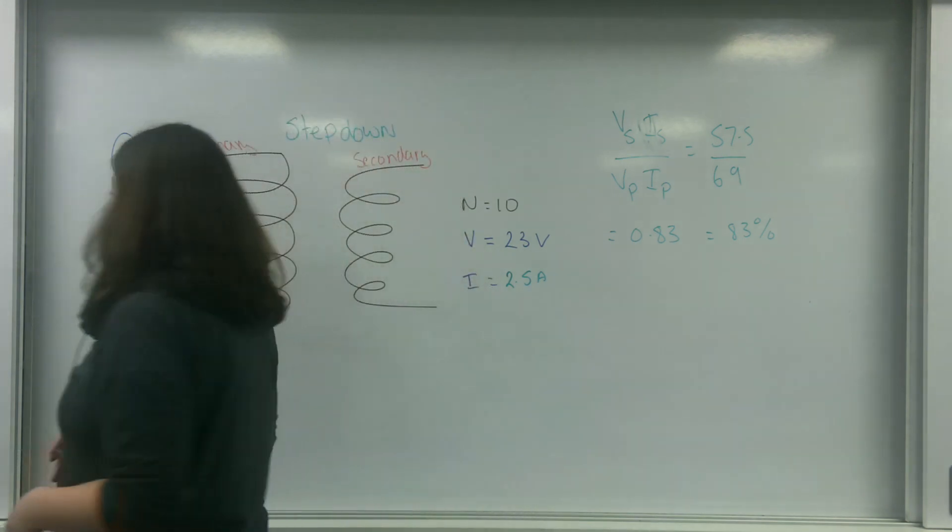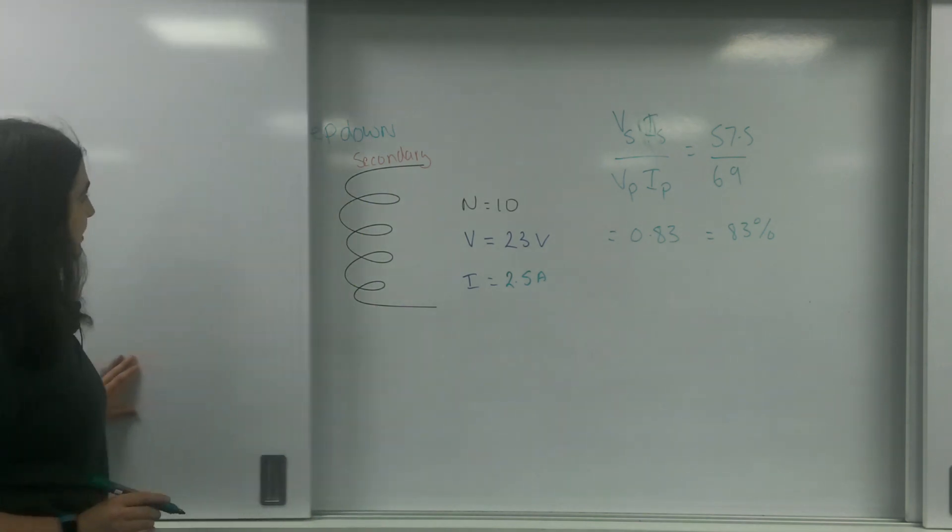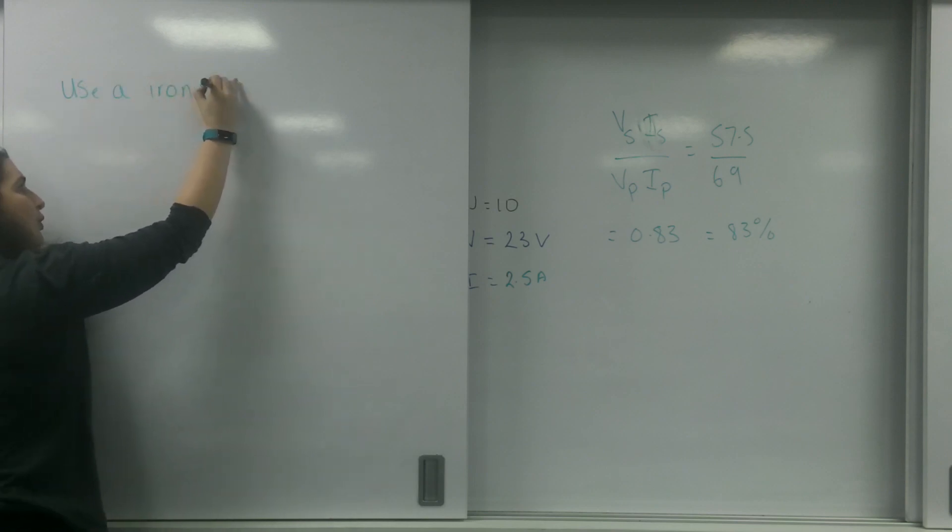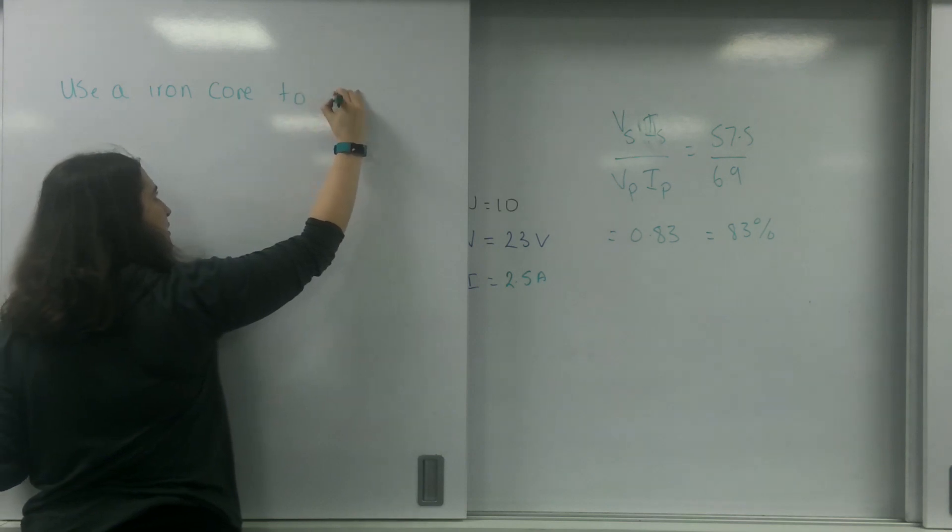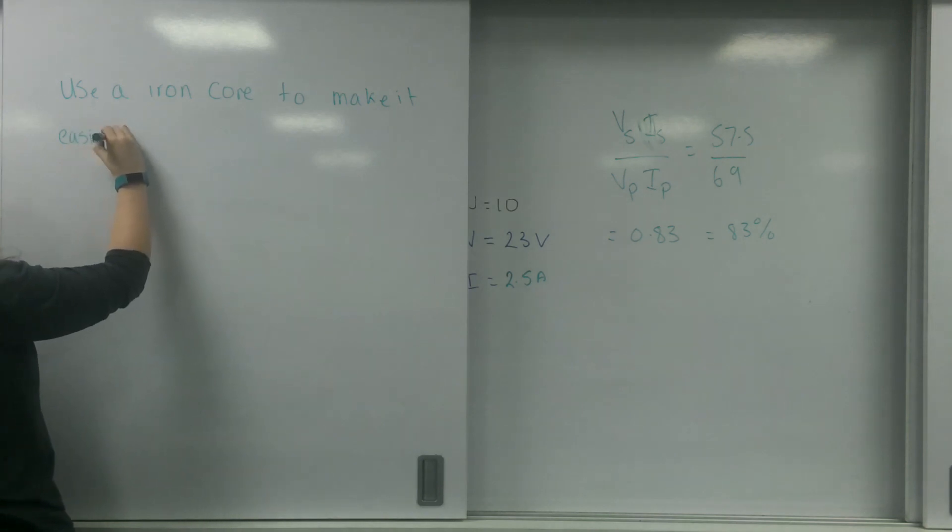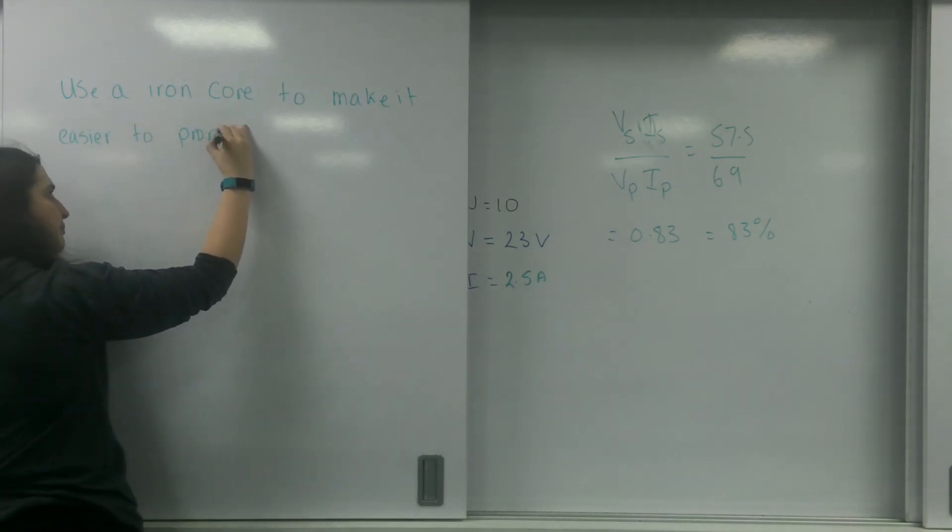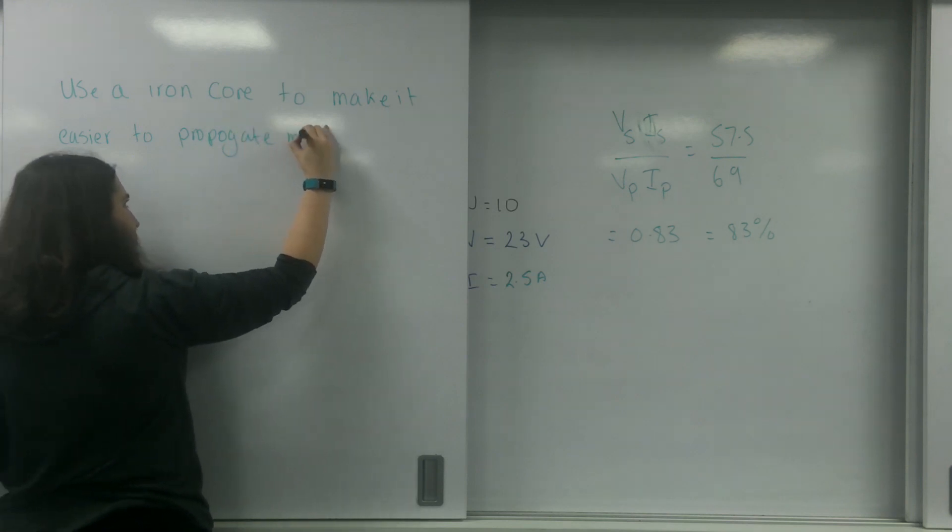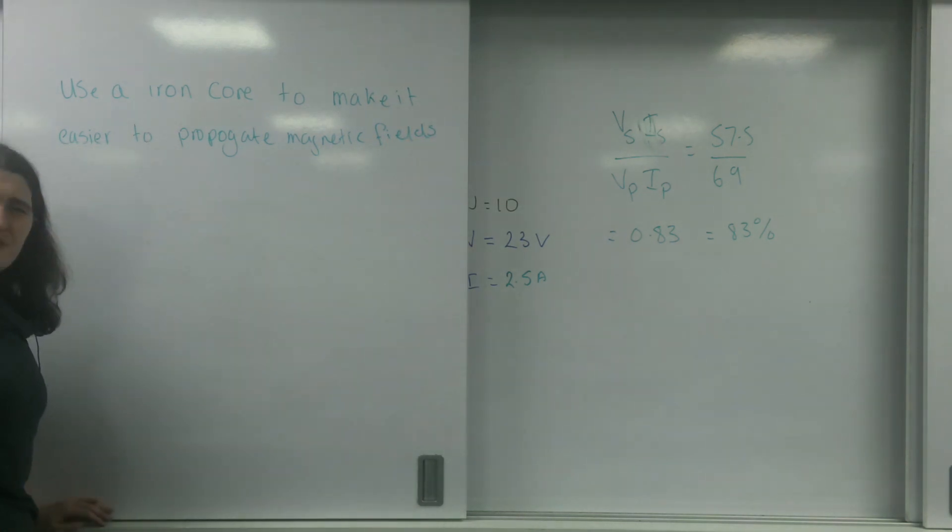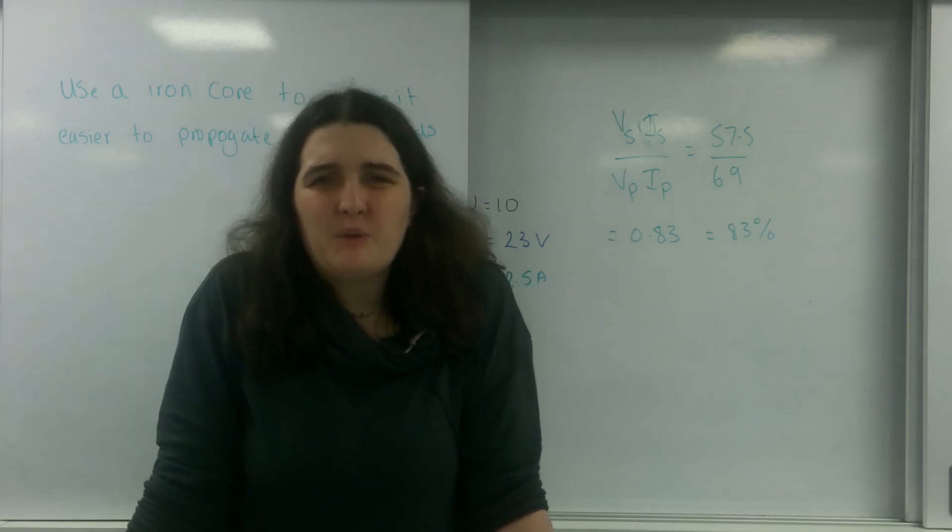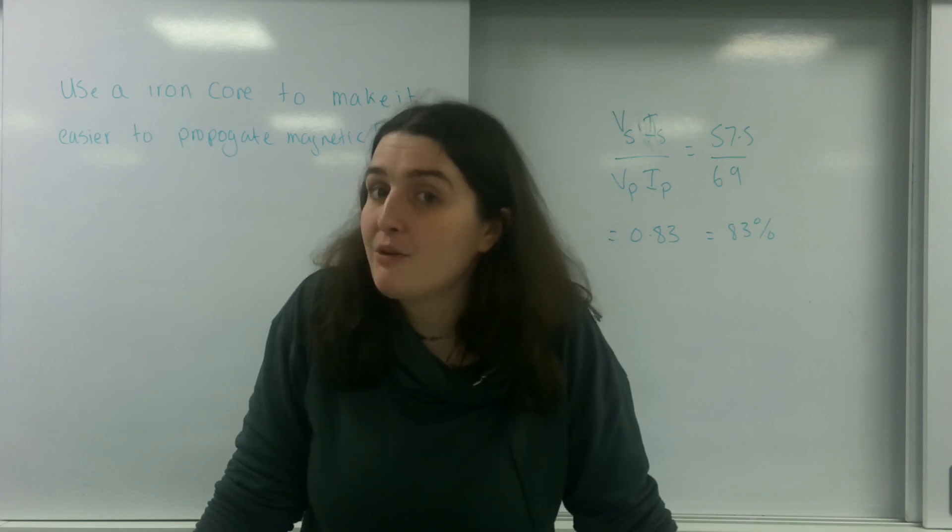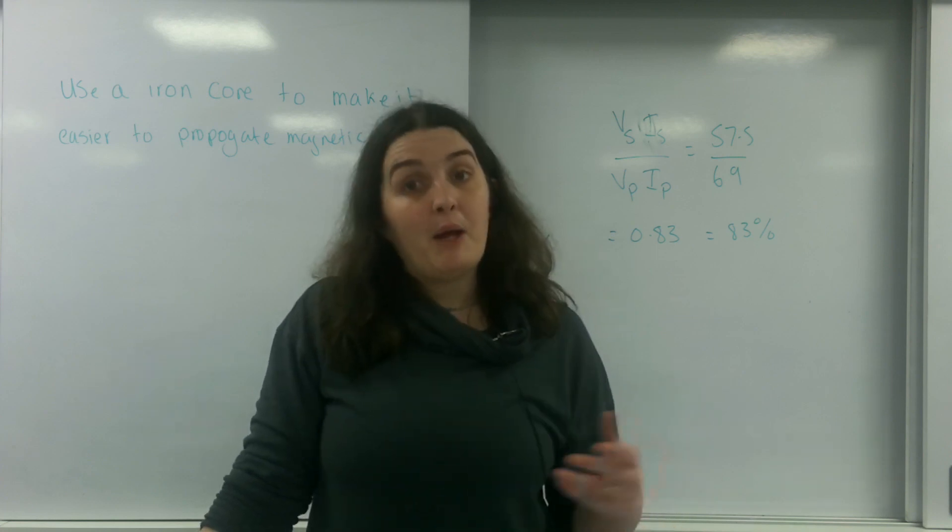I am going to use, to make this more efficient, an iron core to make it easier to propagate magnetic fields. The air is a really inefficient way for a magnetic field to exist. If I channel that magnetic field through a magnetic material like iron, it becomes more efficient.